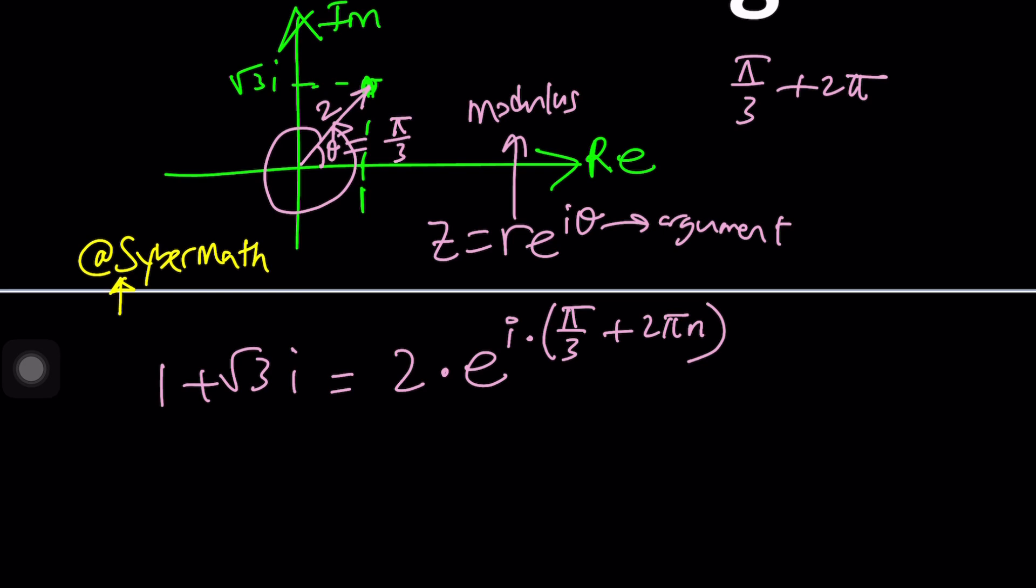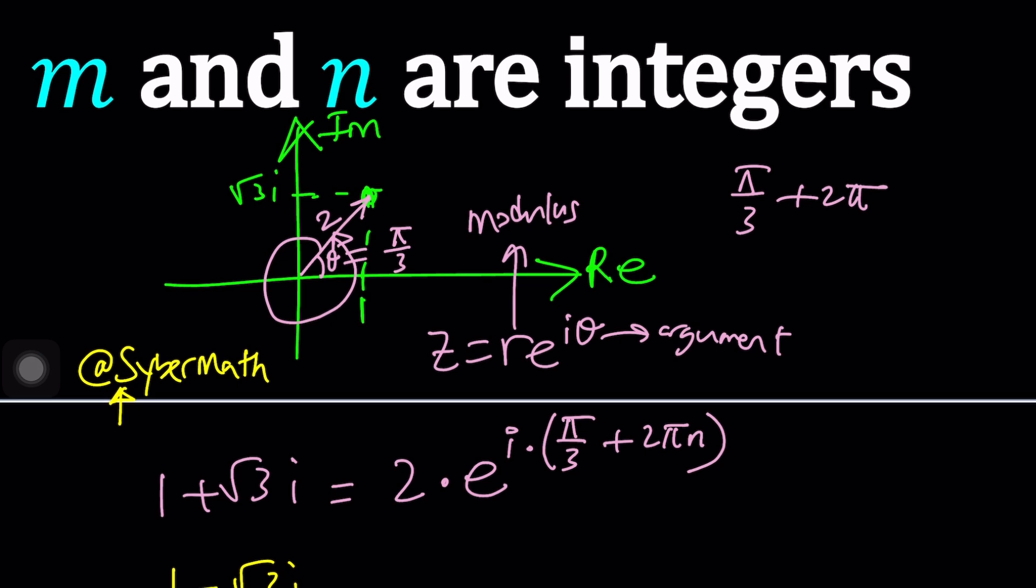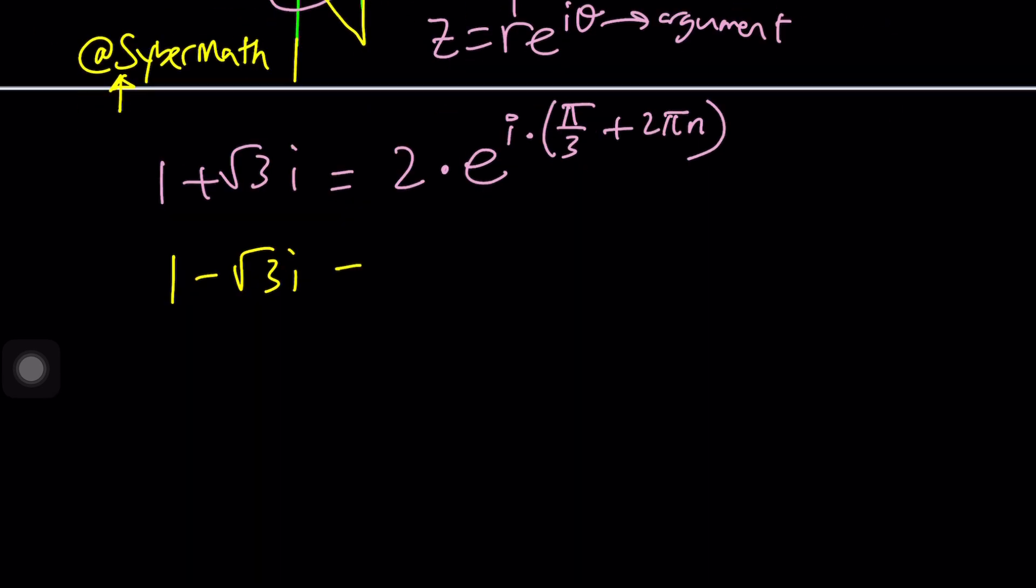All right great, so we have 1 + √3i and what about 1 - √3i? It's basically the reflection of 1 + √3i because the only thing that changes is the imaginary part and that just means we're going to be looking at -π/3, right? It just changes the angle, negates the angle in other words.